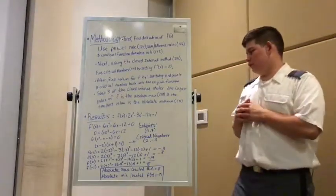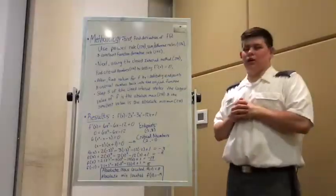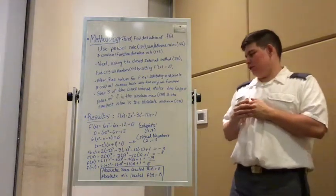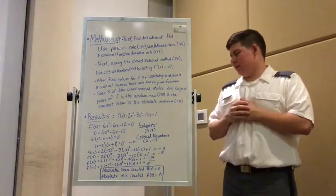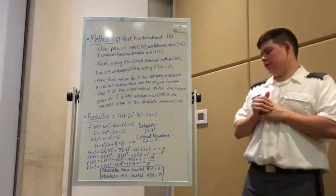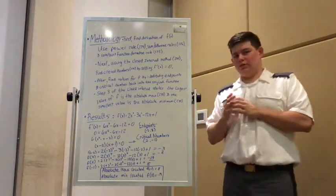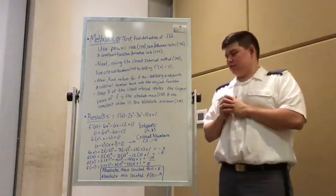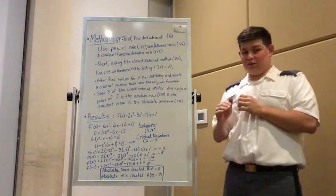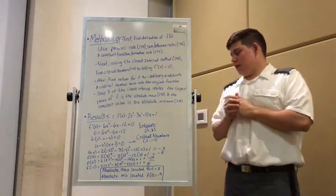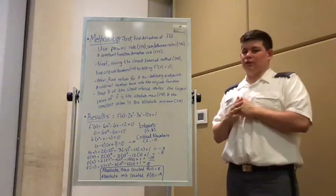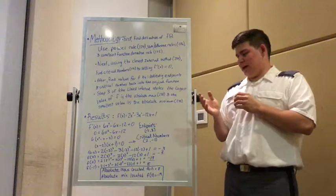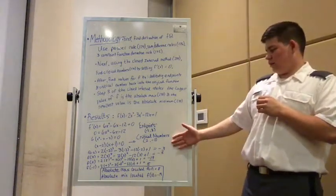As you can see here, we have our results with our given function. With our derived equation, we have f prime of x equals 6x squared minus 6x minus 12 plus 0. Then we set it equal to 0 to find our critical numbers. Then we factor out the 6, and then divide both sides by 6, which gets rid of the 6. Then we are left with x minus 2 times the quantity of x plus 1 equals 0. Then we set those and subtract and add the numbers to get our critical numbers.